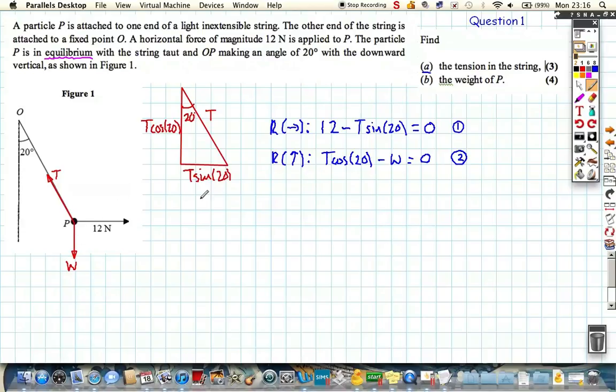Now, we can answer question A. It asks us for the tension in the string. Well, clearly, we're going to use equation number 1, because that's got the only unknown as tension. So, T, rearranging it, is equal to 12 over sine 20 degrees, and then tapping that into our calculator, you get 35.0856528, which is approximately equal to 35.1 newtons, rounding to three significant figures.